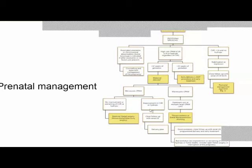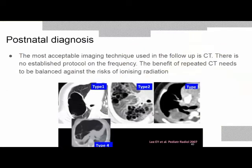Postnatally, various types of CPAMs present differently. X-ray may show subtle changes but is limited as the lesion contains air. The preferred method of choice is CT scan. There is no established protocol for frequency of CT in asymptomatic children, but generally it is recommended after three months of age. The benefit of repeat CT must be balanced against the risk of ionizing radiation.